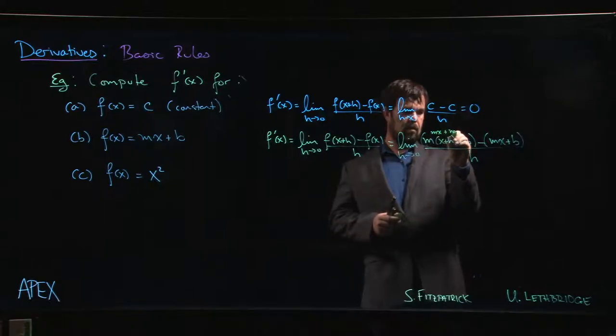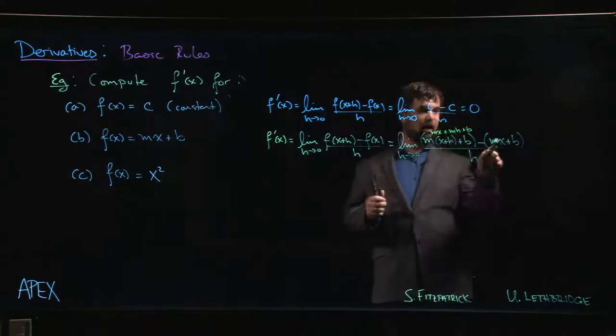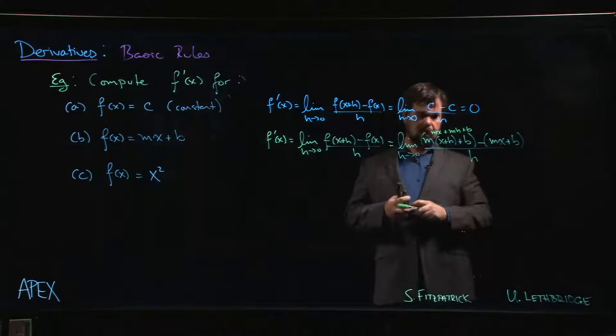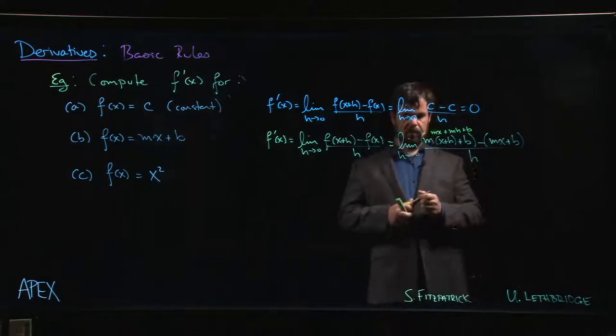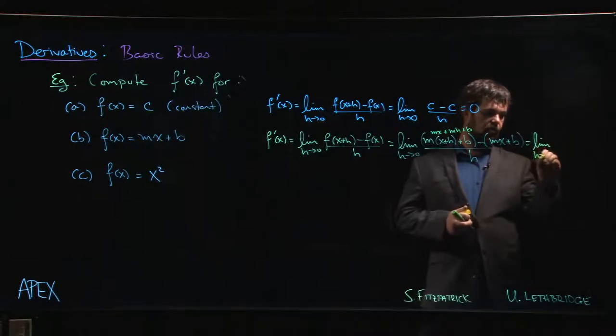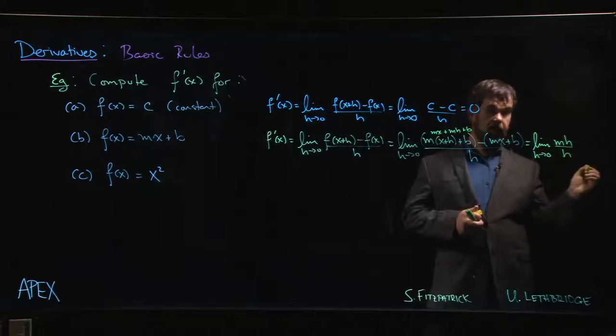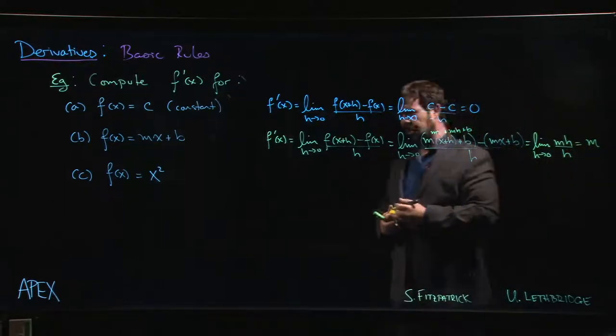So the mx cancels with the mx, the b cancels with the b. We have the limit as h goes to 0 of (m times h)/h, and as expected, that's just m.